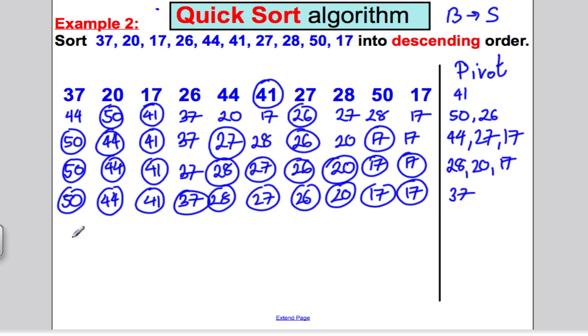Everything's been pivoted. So they are in descending order, 50, 44, 41, 37, 28, 27, 26, 20, 17, and 17. And they are in perfect order for you now, and you have done.